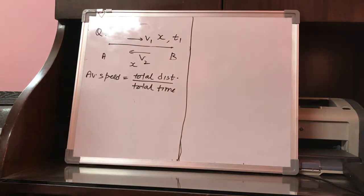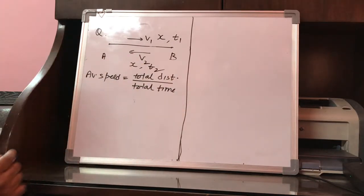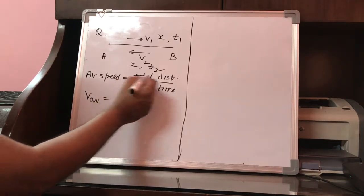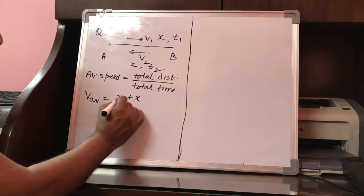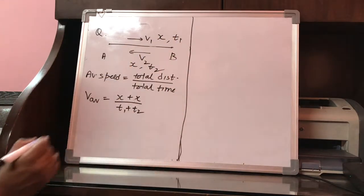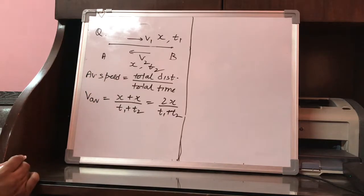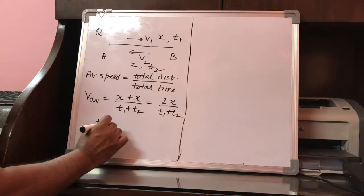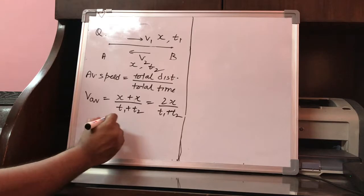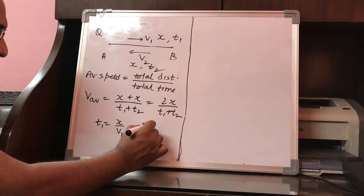Let t1 be the time taken from A to B, and let t2 be the time taken from B to A. So the average speed v_average equals total distance, which is x plus x, divided by total time t1 plus t2, giving us 2x divided by t1 plus t2. Now t1 can be expressed as distance upon speed, so t1 equals x divided by v1.